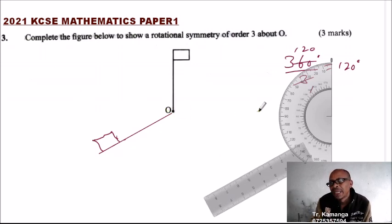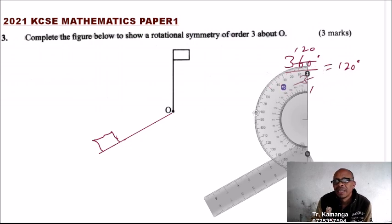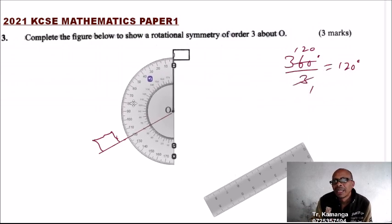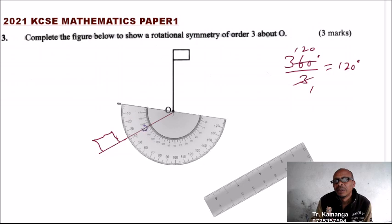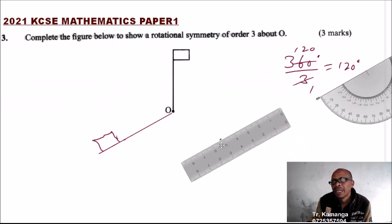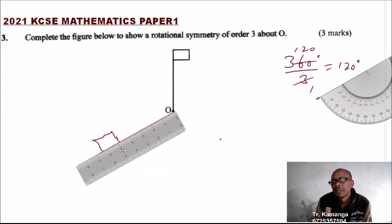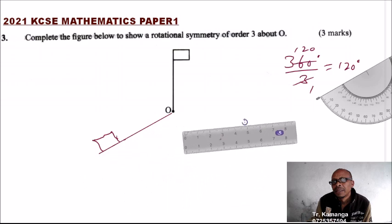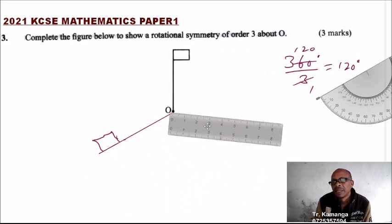You rotate, take your protractor there. From there you measure an angle of 120, so this is where we have 120. It means that the other line will be there.